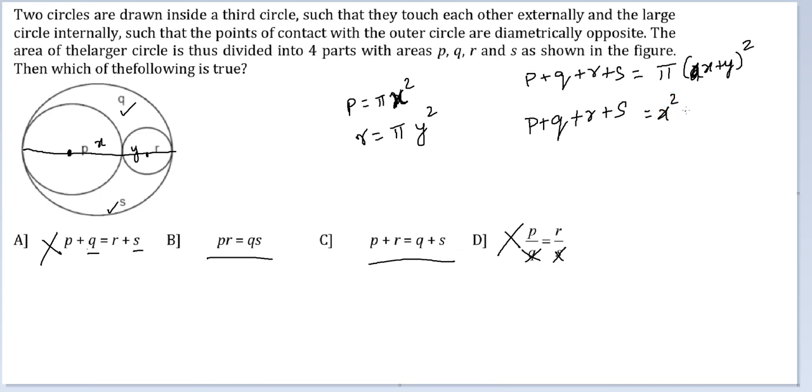X squared pi plus Y squared pi plus 2XY pi. Pi X squared and pi Y squared will go. So Q, which is equal to S, 2Q is equal to 2XY pi, or Q is equal to XY pi.